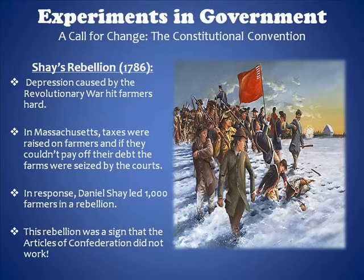Eventually, the Massachusetts legislature sent in the militia and drove them off. This was a very important event because this rebellion was a sign that the Articles of Confederation cannot and will not work for the 13 states, and they must begin to explore other options.